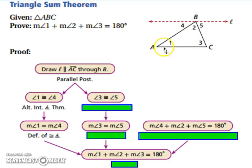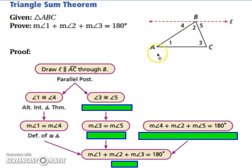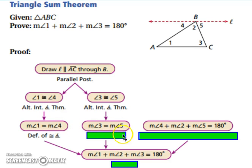Now, if line L and AC are in fact parallel to each other, we know that angle 1 and angle 4 will be congruent, the same as angle 3 and angle 5. Both are using the alternate interior angles theorem. Since they are congruent, all congruent angles also have equal measures, so by using the definition of congruent angles, we can state that their measures are equal.